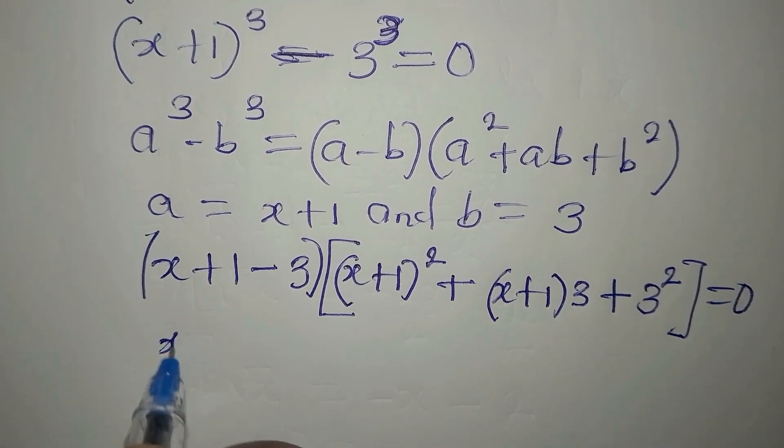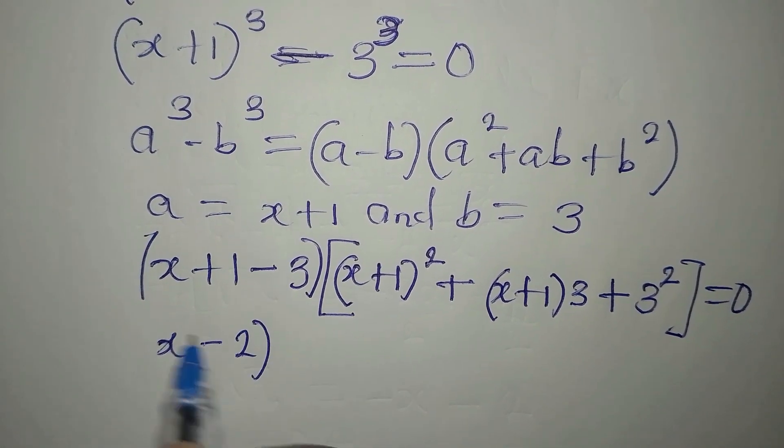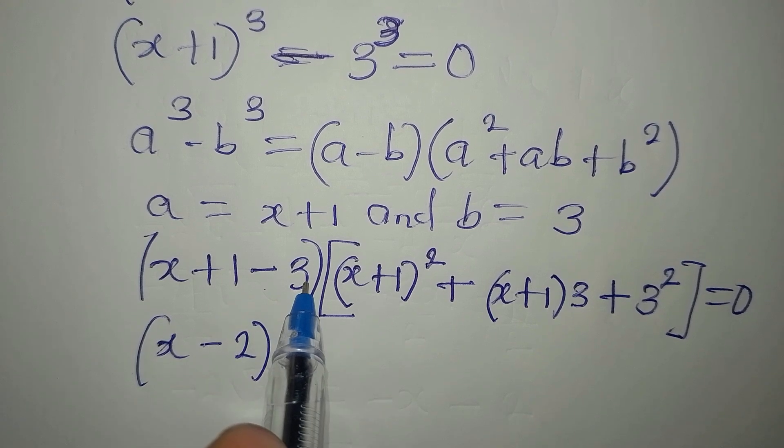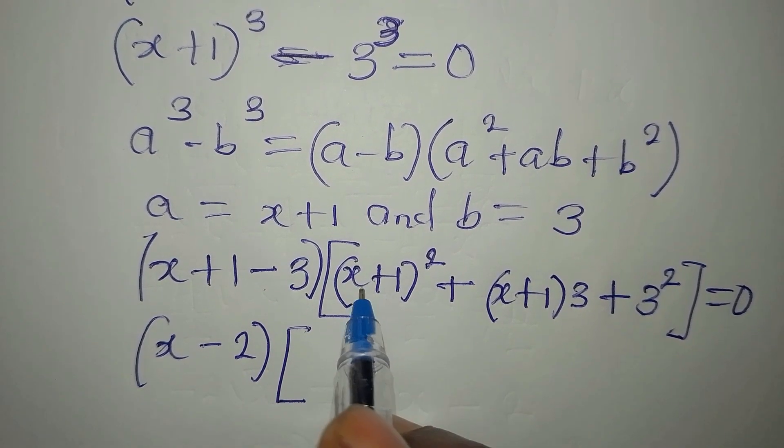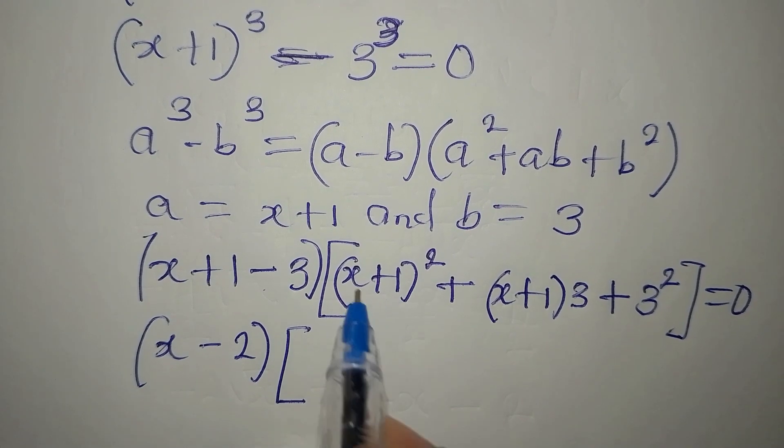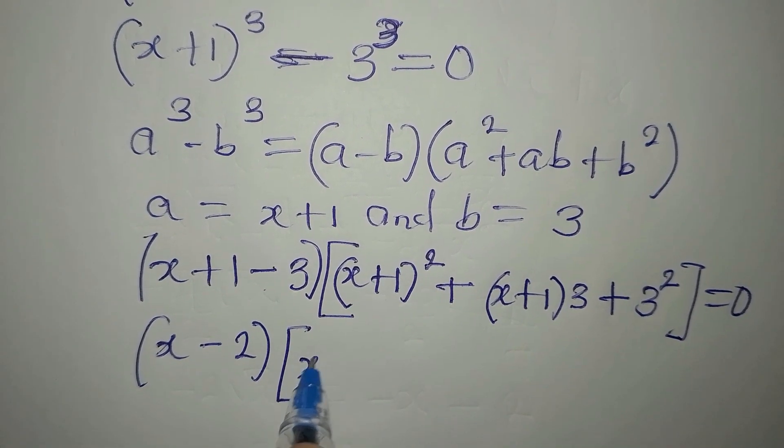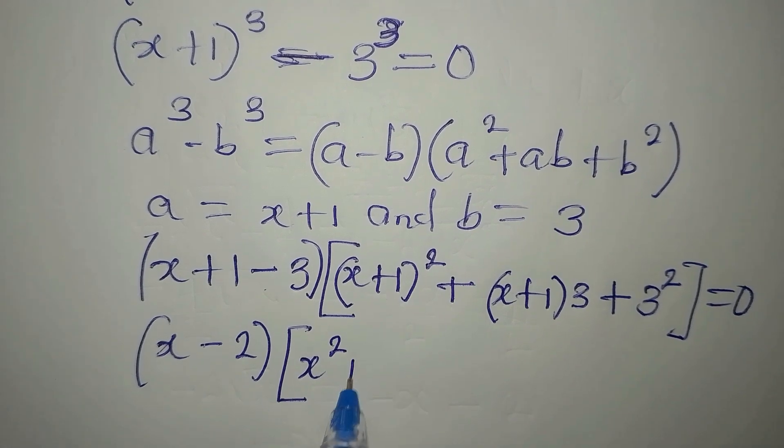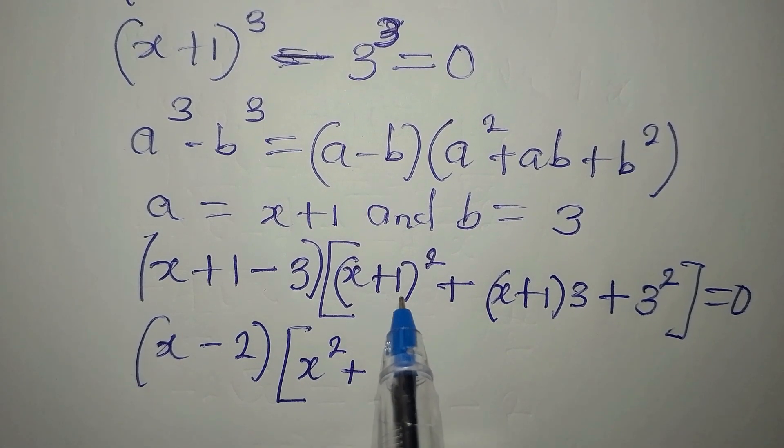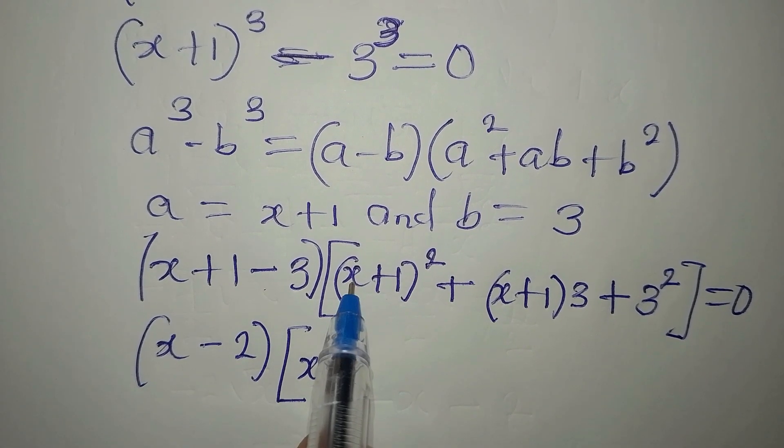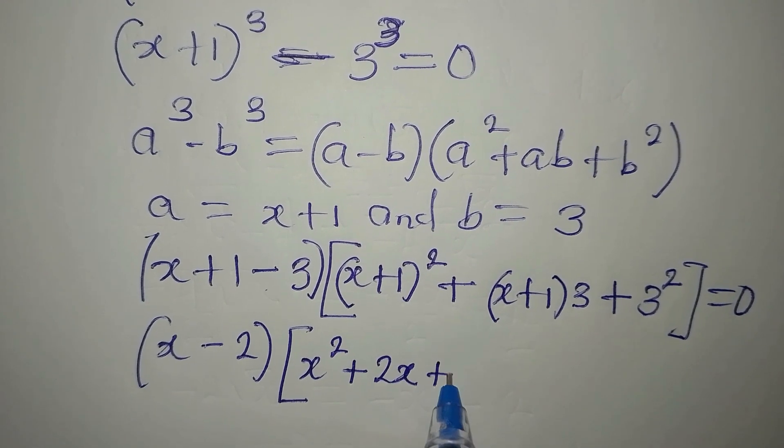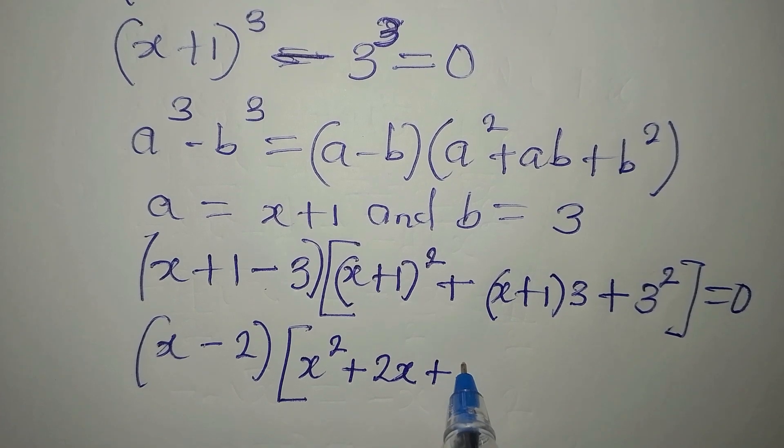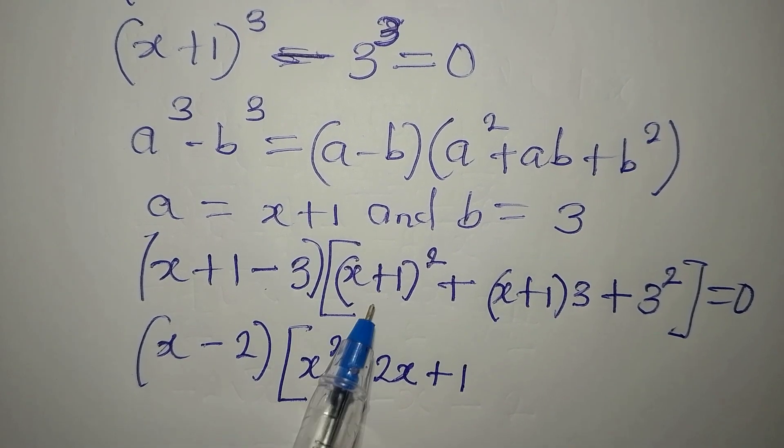Now we have x minus 2 because 1 minus 3 is minus 2. Then we open bracket. We expand this. The expansion of this one will give us x squared plus 2x plus 1. That is the expansion of this one.